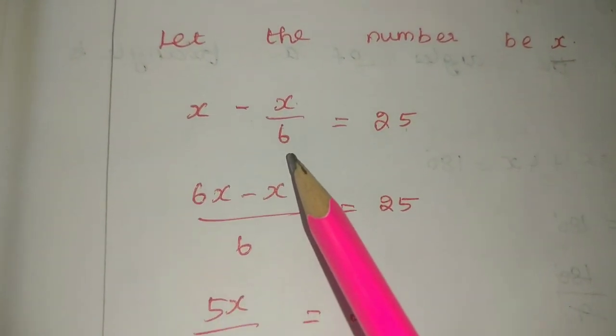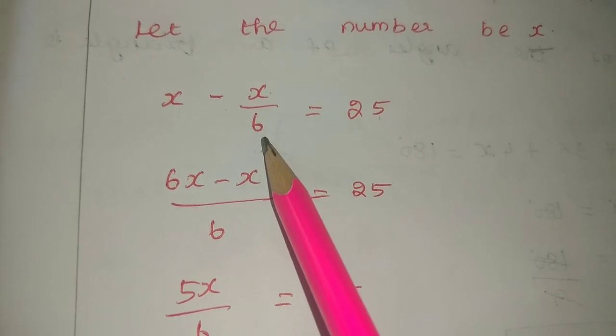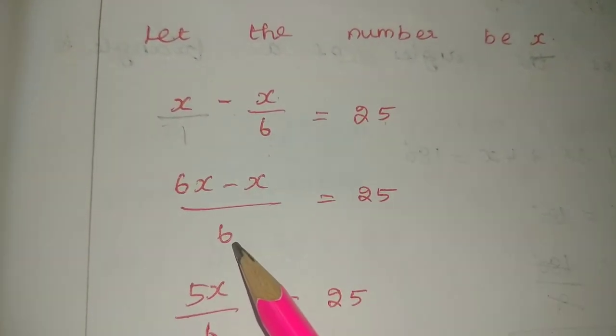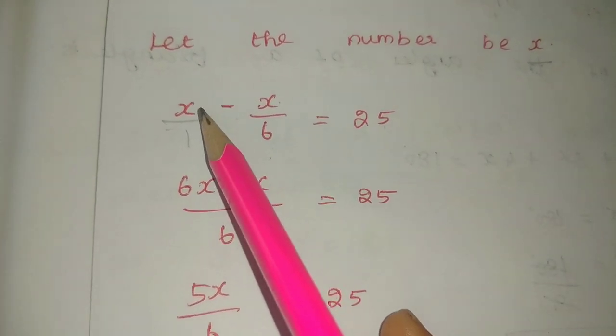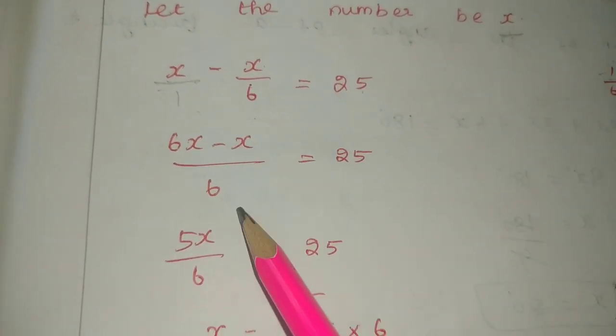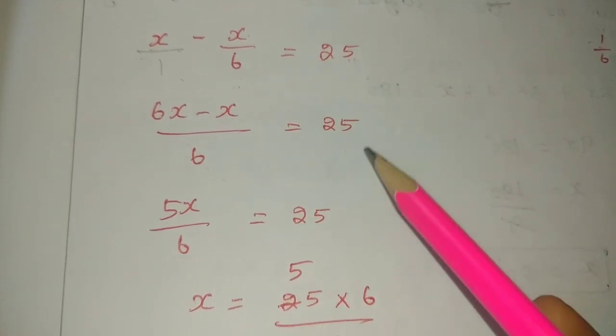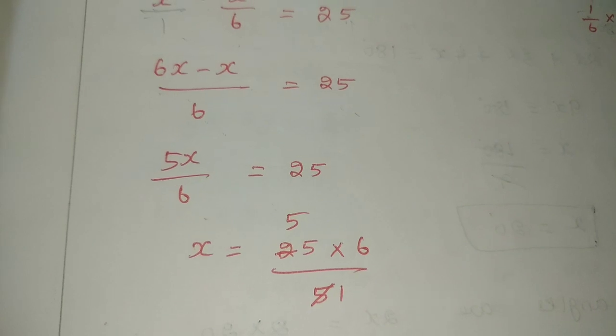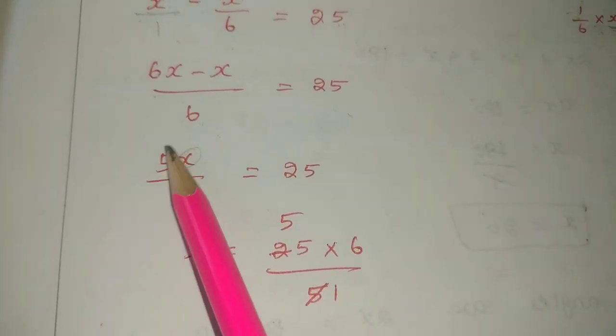Now, what do we do? Take LCM. The LCM is 6. So 6x minus x by 6 equals 25. 6x minus x is 5x by 6 equals 25.